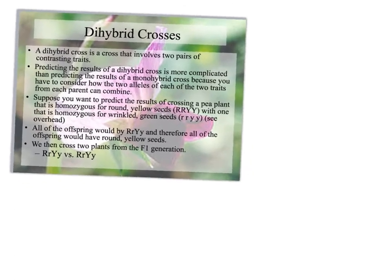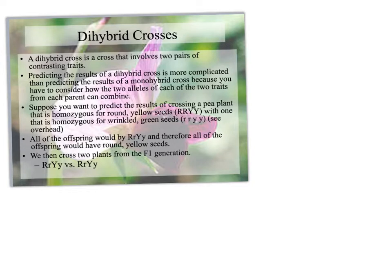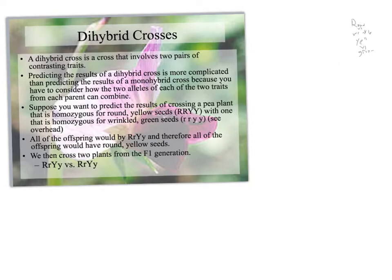Basically, the idea is this: if we're looking at something and we want to know about two traits, not just one, how do we go about doing that? For example, if I want to look at round versus wrinkled for a plant, and that same plant I wanted to look at yellow versus green. There is a way for me to figure this out. It's called a dihybrid cross.